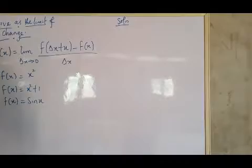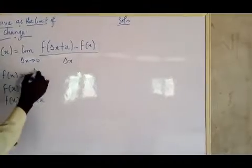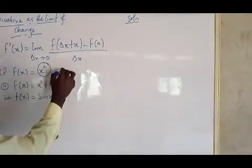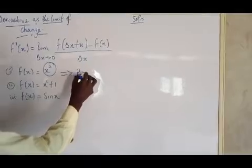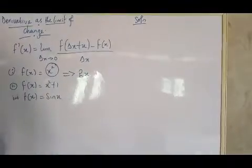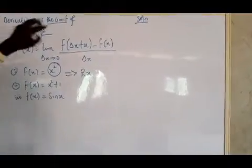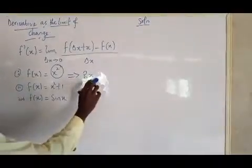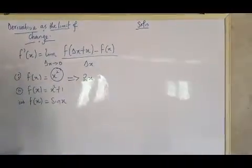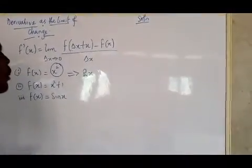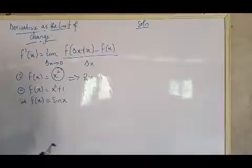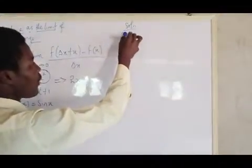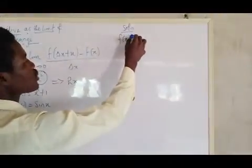For the first example, now when you differentiate x squared, what will you get? You will get 2x. That means when you apply this formula, your final answer should be 2x. Do we agree to that?